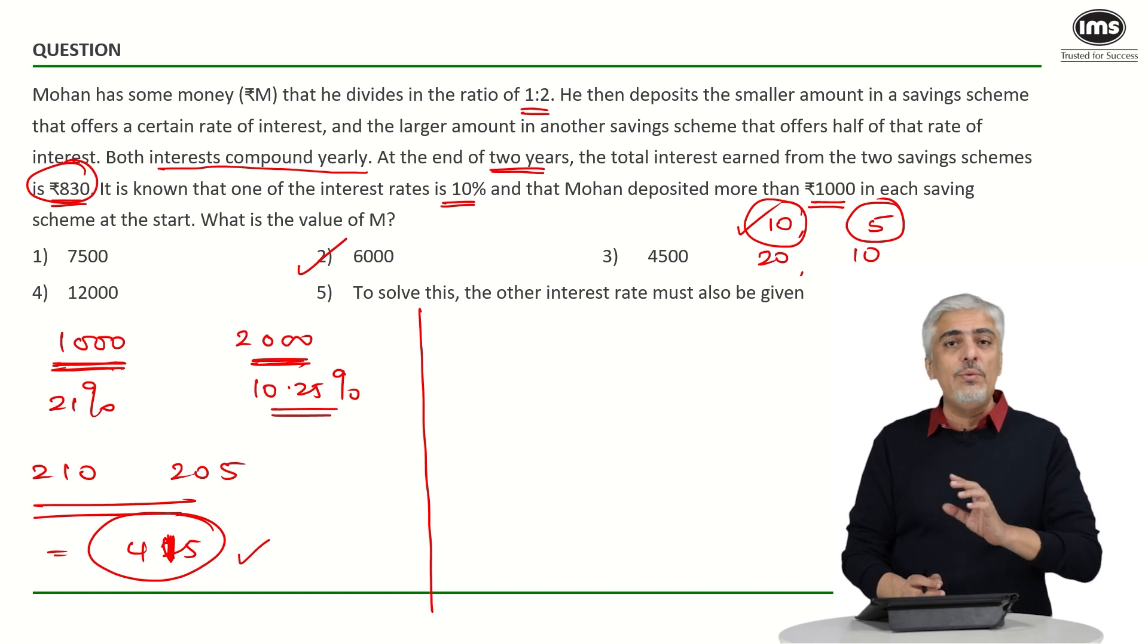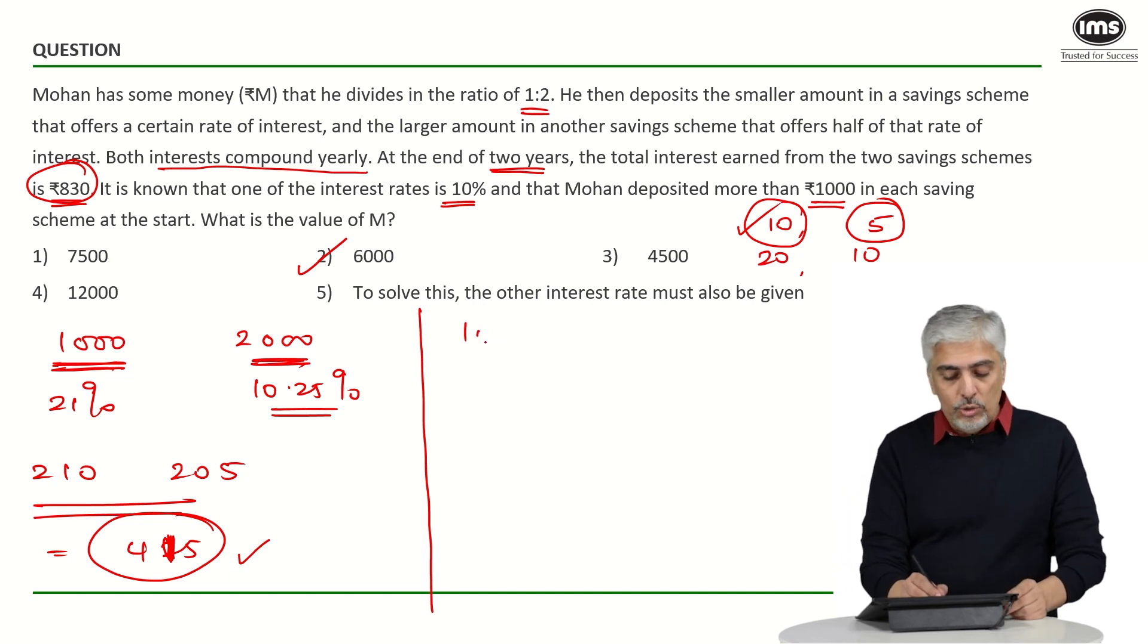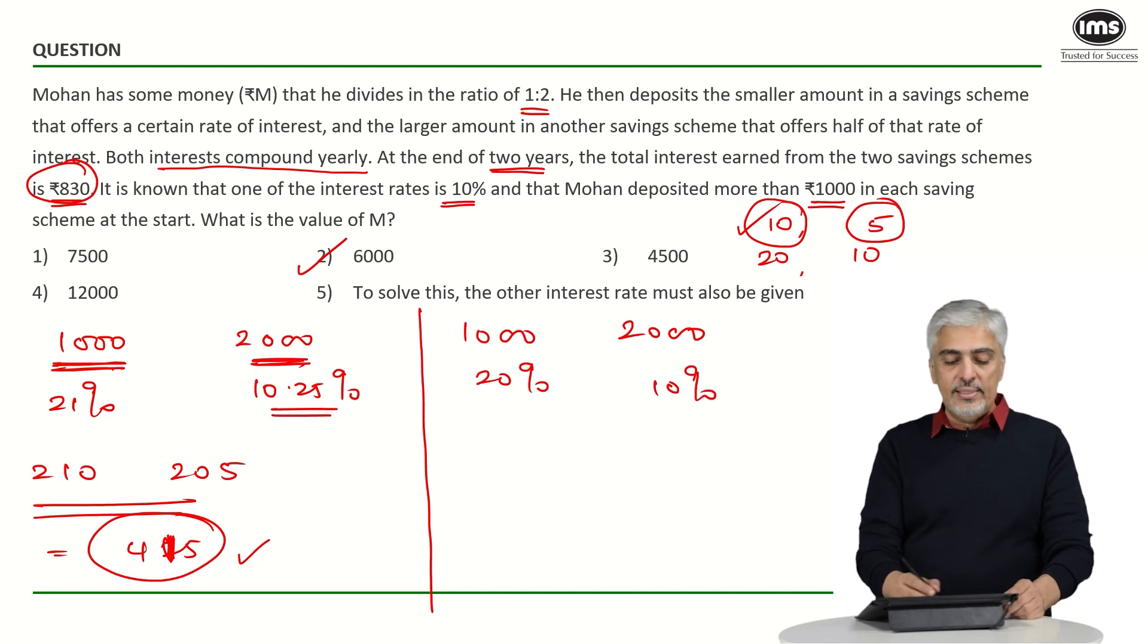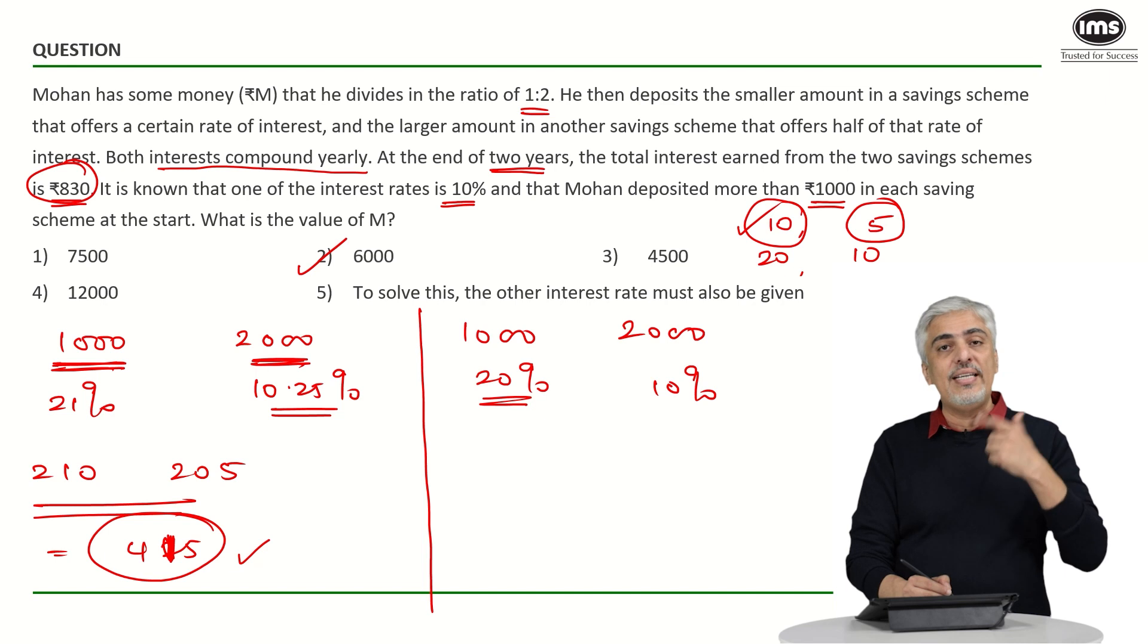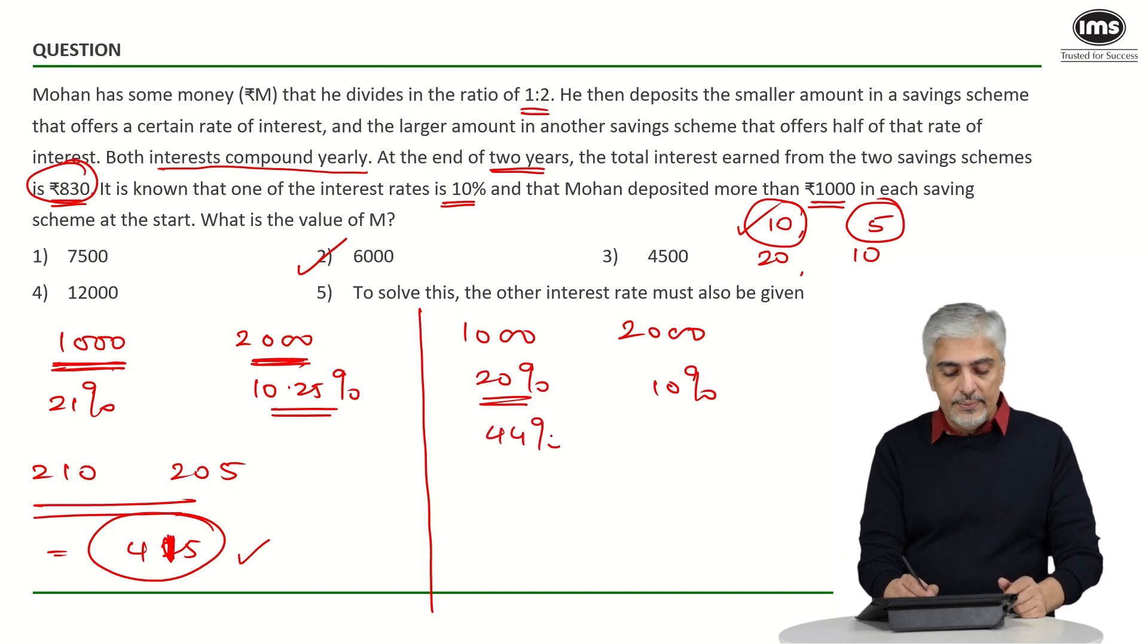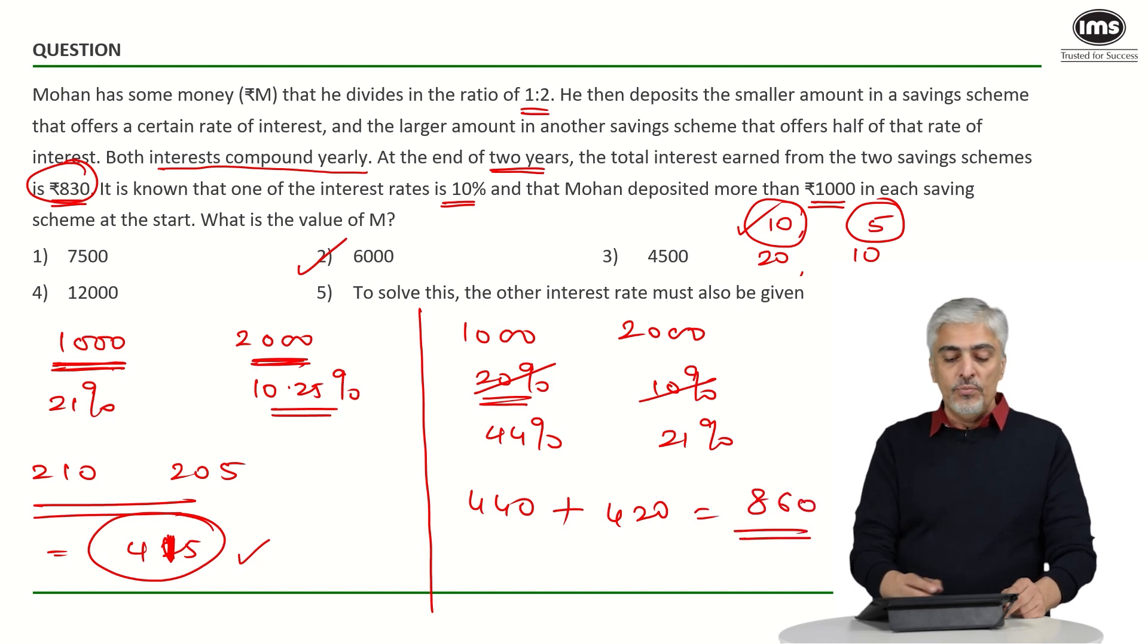But just to make you understand properly why is the other value not possible. So, if I took 1000 over here and 20% over here and 2000 over here and 10% over here. What happens? 20% for 2 years will become 20 plus 20 plus 4, 44%, right? 2 years and 10 will become 21%. 44% of 1000 will be 440 plus 21% of 2000 will be 420, which is 860 which is already more than 830. So, even with the minimum values you are reaching 860 which is more than 830. So, this value is never possible.